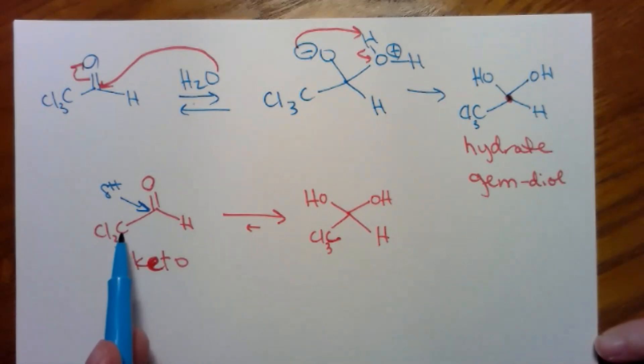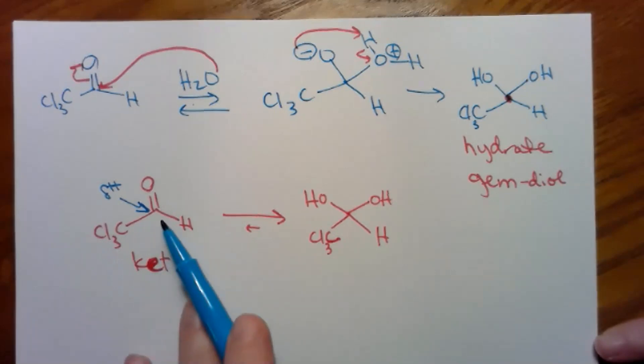Then I've got a carbon, which is typically a donor, but this carbon has three electronegative chlorines on it. So, that carbon is actually pulling electron density away from your carbonyl carbon, making it more partially positive than average.